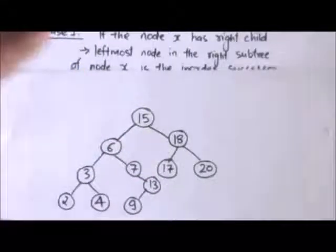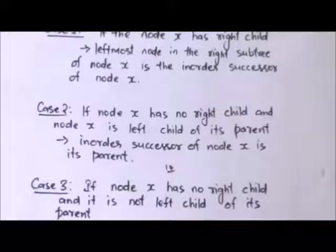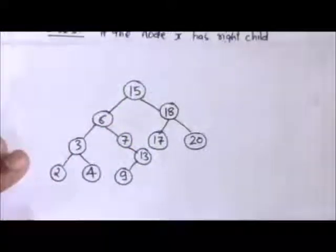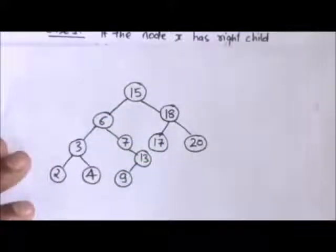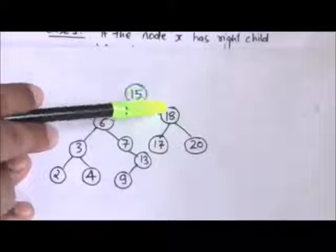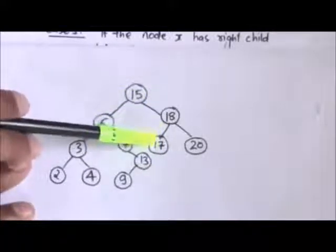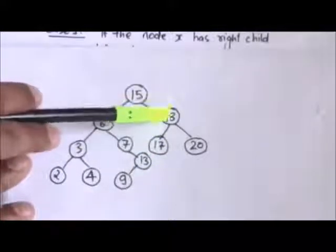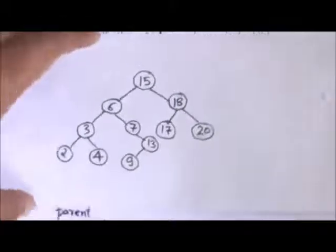Second case: if node X has no right child and node X is the left child of its parent, then the in-order successor of node X is its parent. Consider the node with value 17 — this node has no right child, and it is the left child of its parent. Its parent is the node with value 18, so node 18 is the in-order successor of node 17.